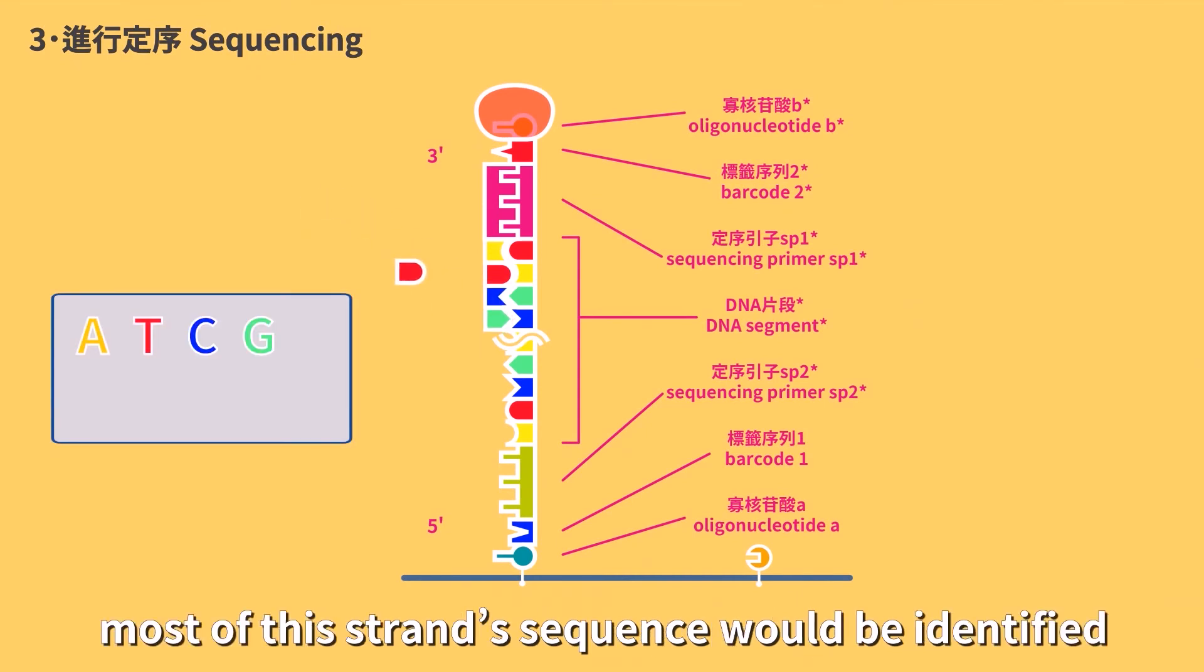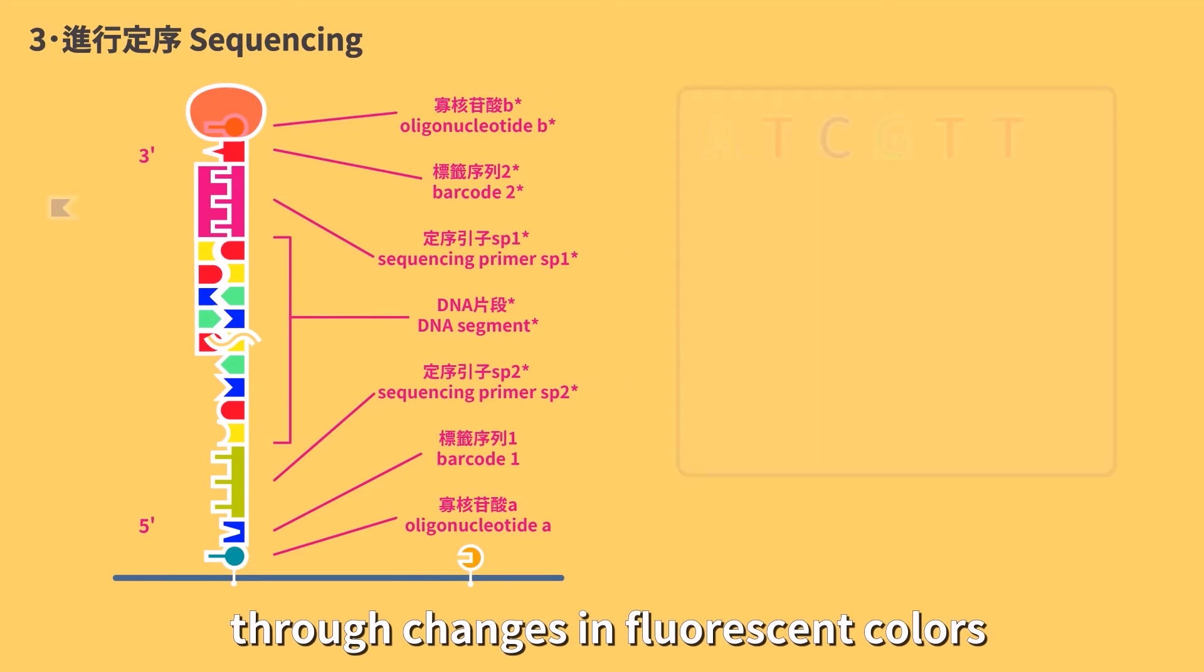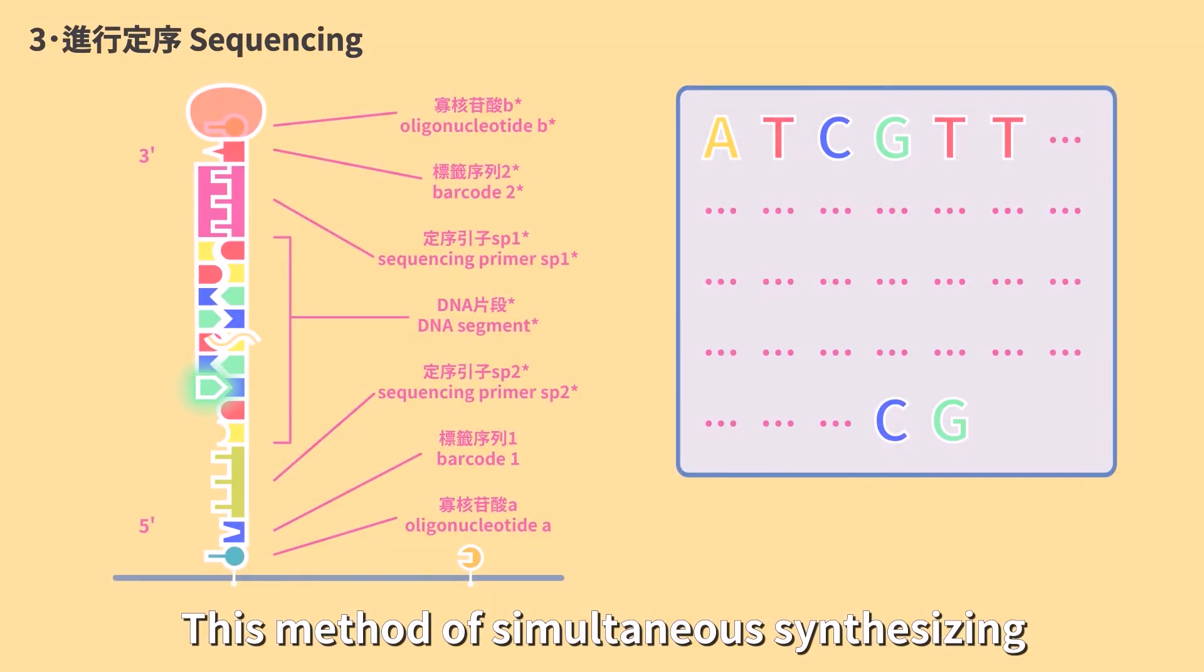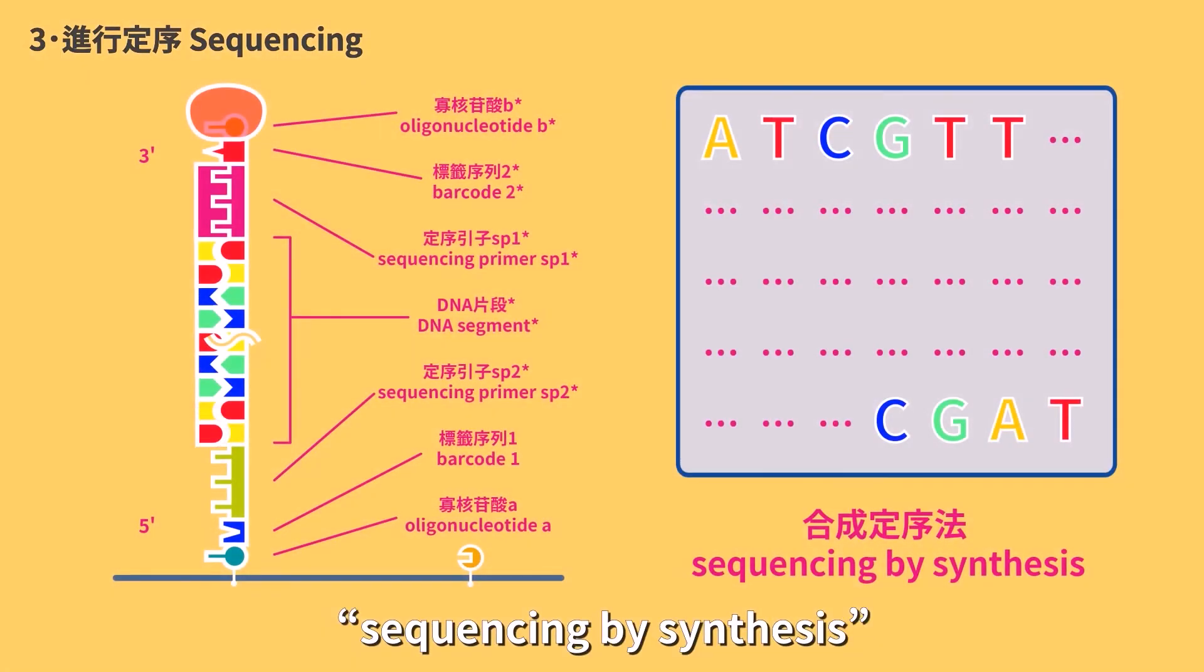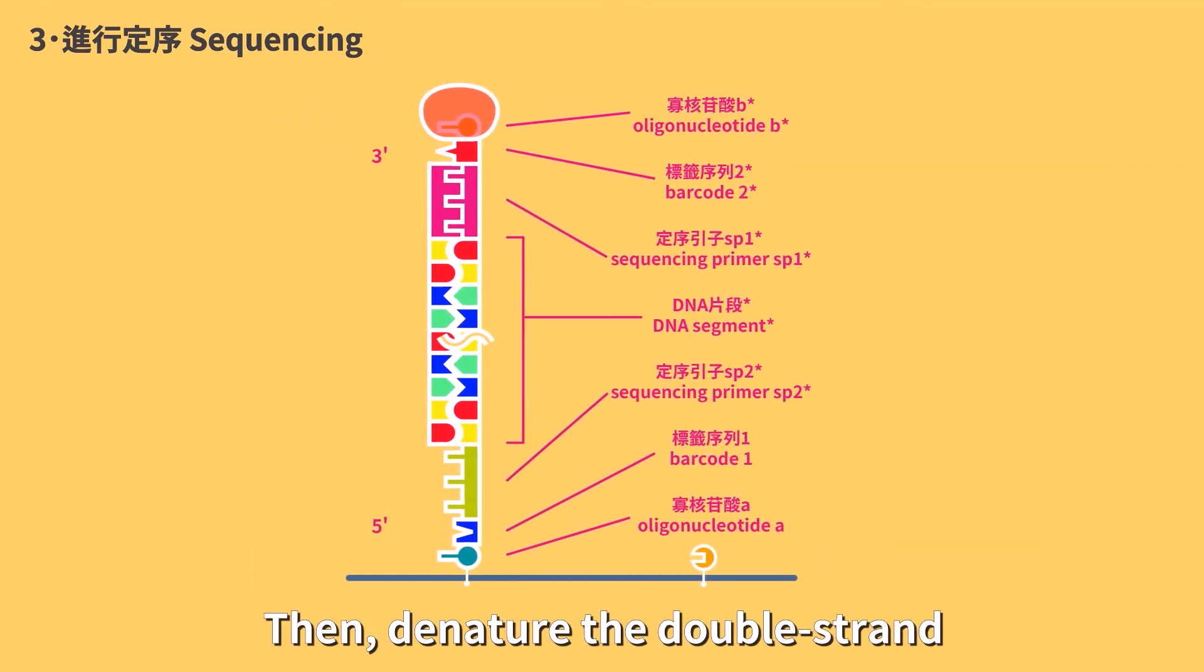After multiple repeated cycles, most of this strand's sequence will be identified through changes in fluorescent colors. This method of simultaneous synthesizing and sequencing is called sequencing by synthesis.